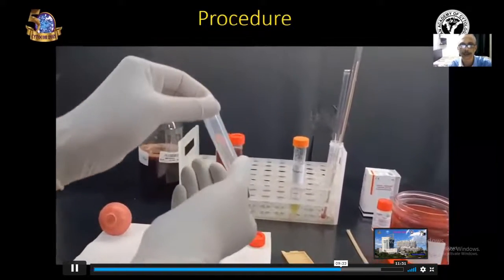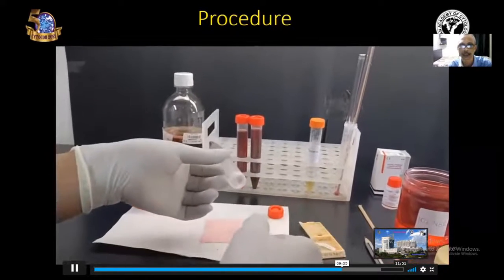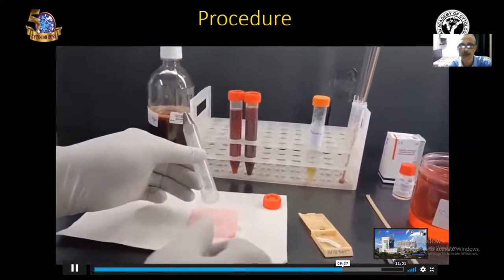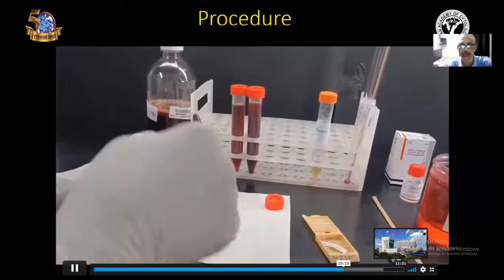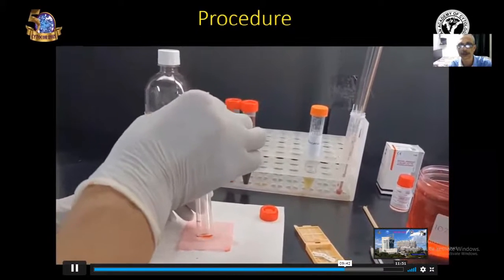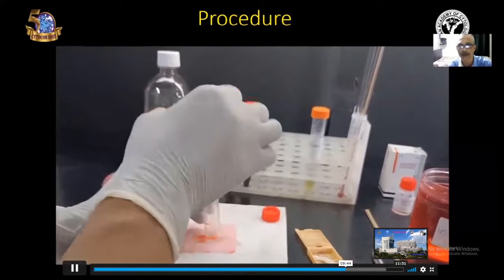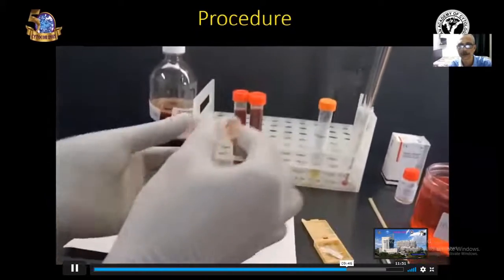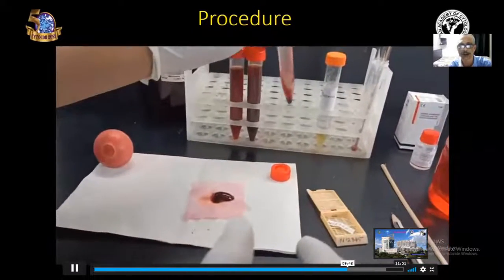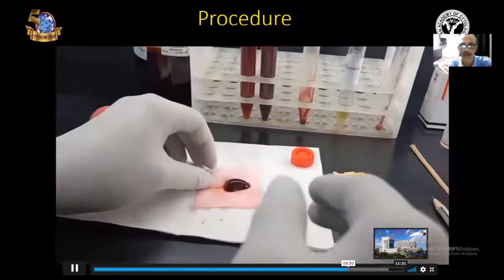Now, take the sediment which is clotted and hold the tube in an inverted position and just tap at the bottom of the tube. Just one or two taps, the sediment will come out of the tube and it will fall onto the filter paper.